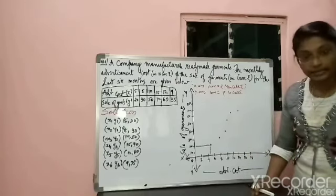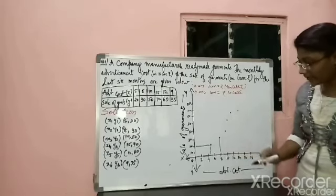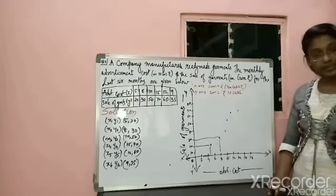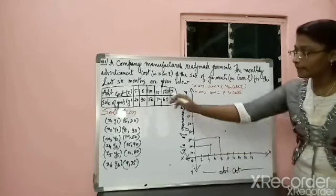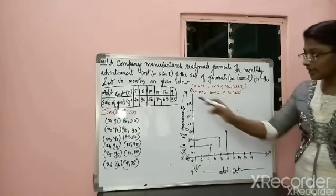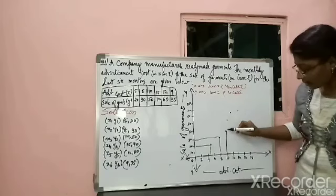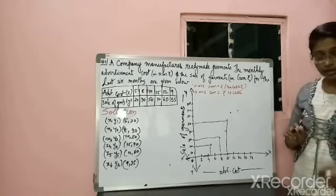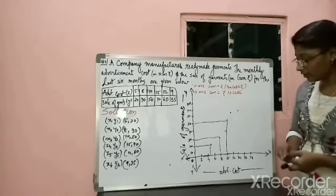For X2, Y2 that is 8 and 30: find 8 on the X-axis and 30 on the Y-axis, mark the intersection. For X3, Y3 that is 10 and 50: find 10 on the X-axis and 50 on the Y-axis, mark that point. Like this you have to plot for every variable — continue for all remaining data points.